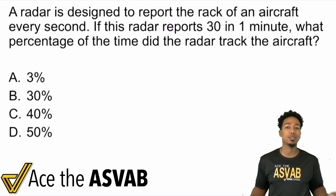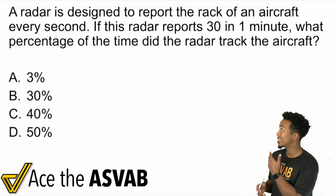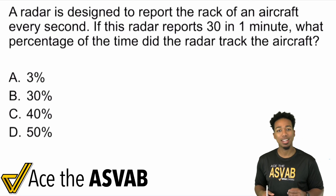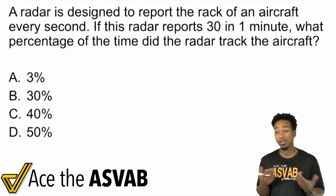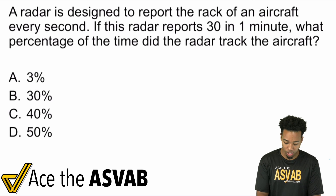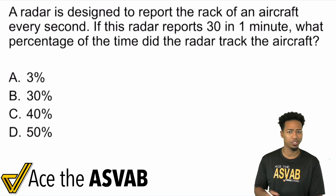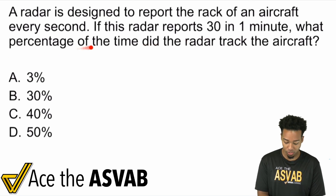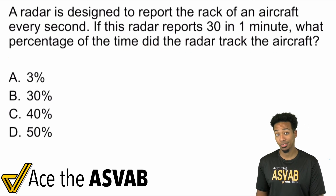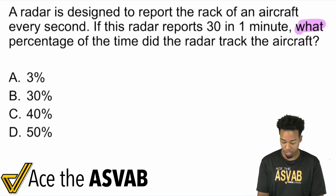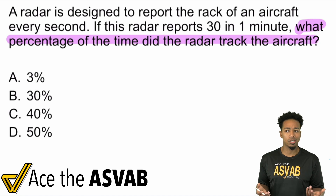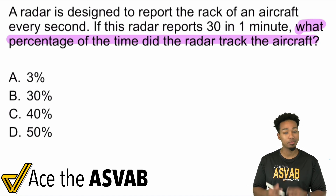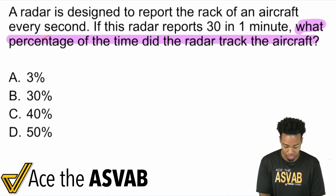What we've got going on right here is a question submitted to me from a student. I'm not sure where it came from, but this definitely looks like an arithmetic reasoning problem that we're going to tackle. I'm going to show you how not every word problem is as complicated as it needs to be. First things first with every word problem: read the question. What's the question here? 'What percentage of the time did the radar track the aircraft?' The main word that stands out here is 'percentage' — that is a solid math term. So we can agree that percentage is what we're looking for.